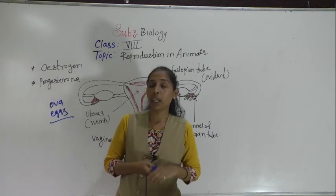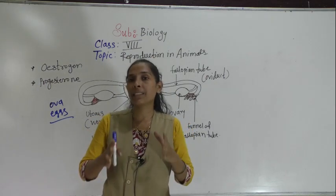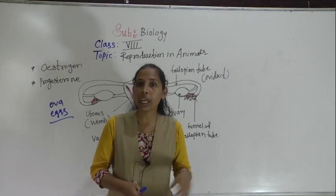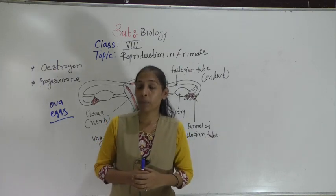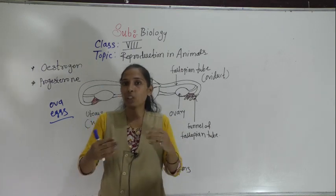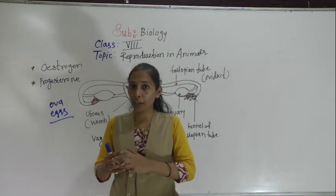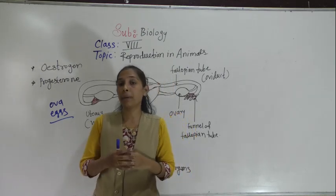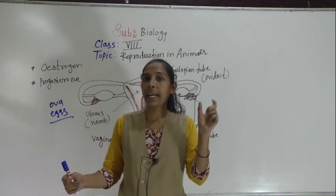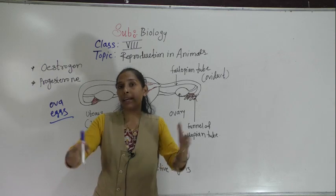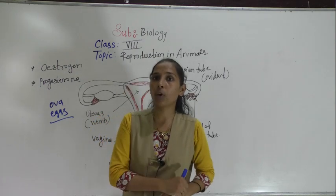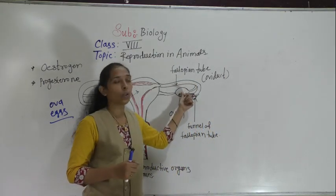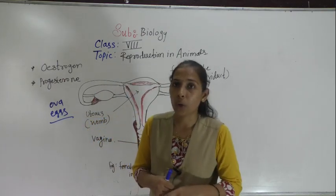At the age of puberty — puberty being the stage when certain physical changes happen in the body of boys and girls, making them physically like an adult — during puberty, the ovaries start to produce the ova or eggs.